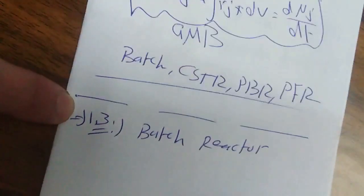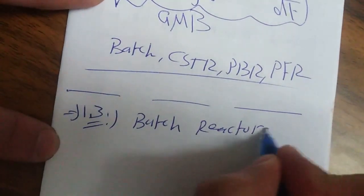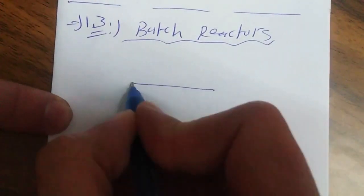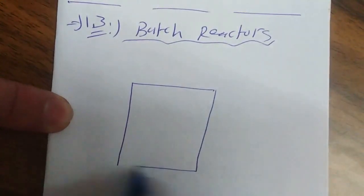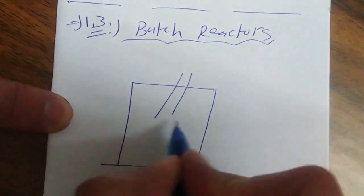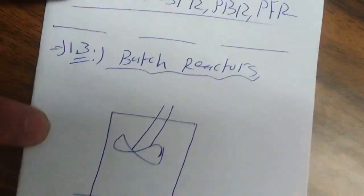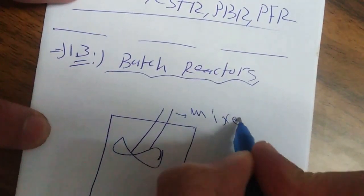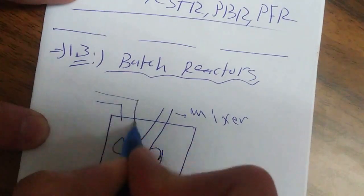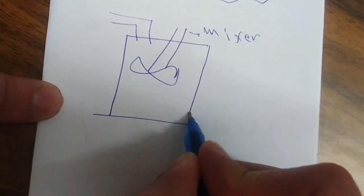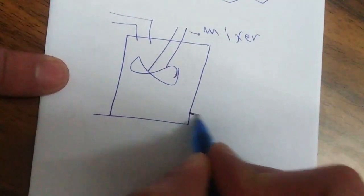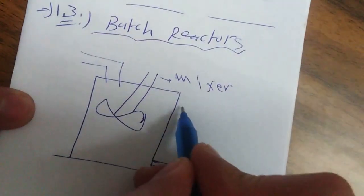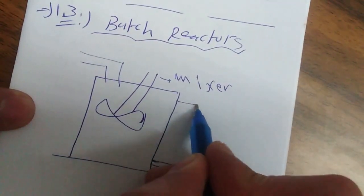لو جينا على Section 1.3، رح نتكلم عن الـ Batch Reactor، ونطبق General Mole Balance Equation عليه عشان أشتق design equation اللي له. الـ Batch Reactor هو تقريباً tank، فيه المكسر، الـ input بيكون من هون والـ output أحياناً بيكون من هون أو من هون.